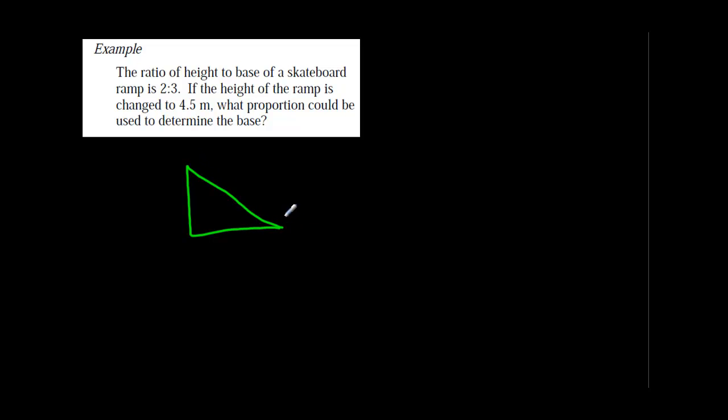It says the ratio of height to the base. Height is right here, and we're going to call that 2, because that's the first number in our ratio. The base is at the bottom, and that is 3. Now let's keep reading. If the height of the ramp is changed to 4.5 meters, what proportion could be used to determine the base?